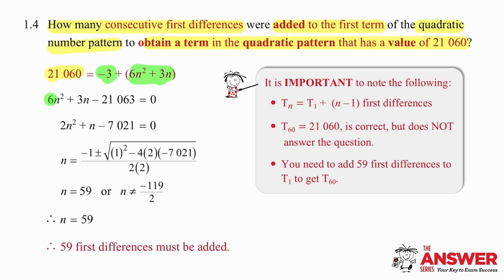If we put that equation into standard form, in other words equal to zero, using the quadratic formula we can work out that n either equals 59 or negative 119 over 2, which we discard because we cannot have a negative value nor can we have a fraction. So the only possible value is 59 and there are 59 first differences that must be added.